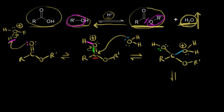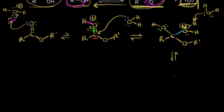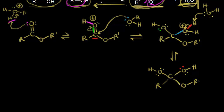In the next step we need to deprotonate — we need to get rid of that +1 formal charge. A molecule of water can come along and this time function as a base. Water is going to take this proton, leaving these electrons behind on that oxygen. So we would now have this carbon with an OH on the left, and after we deprotonate, we're also going to have an OH on the right. Drawing in everything else, we have our R group on the left and we have OR prime on the right.